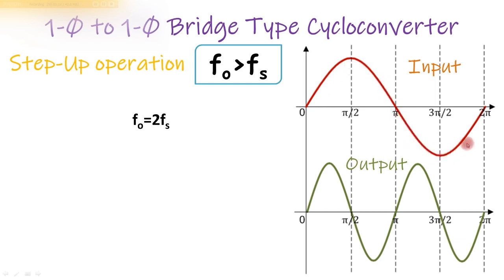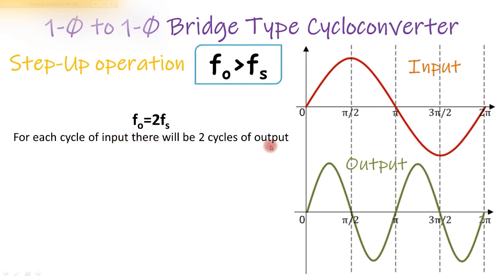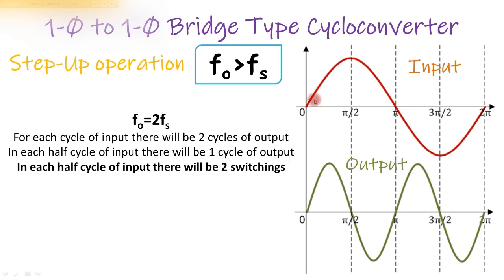This is one cycle of input or supply. If the output frequency is twice the supply frequency, there have to be two cycles of output for one cycle of input. Therefore each half cycle of input will have one complete cycle of output. To obtain one complete cycle of output within one half cycle of input, we have to perform two switchings, because the supply goes from zero to positive and positive to negative — so there have to be two switchings.